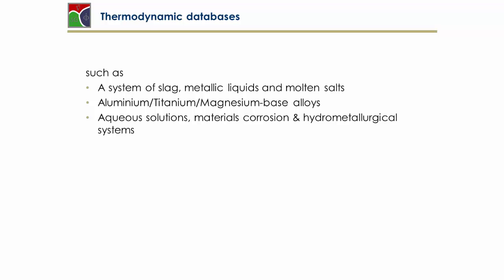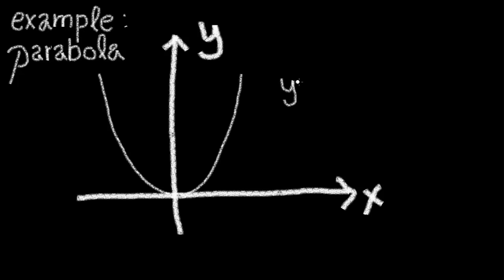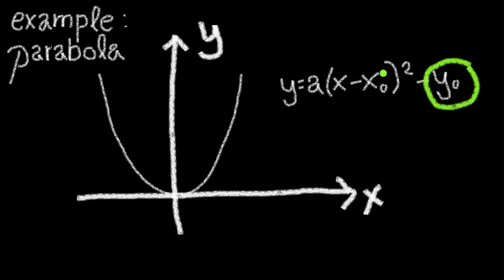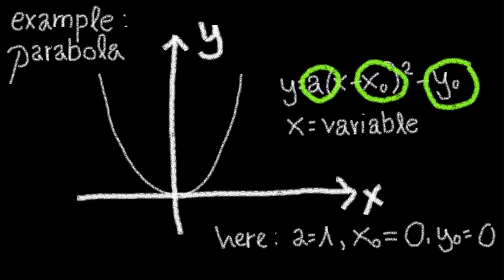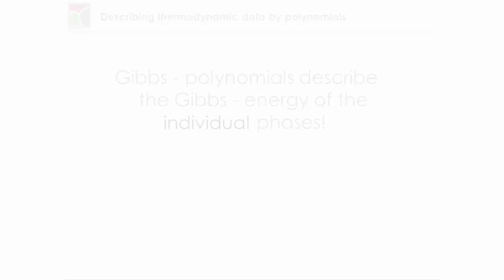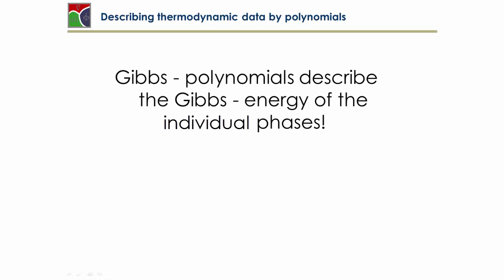Obviously, there are several examples for thermodynamic databases. But in the following, a mathematical example is presented to bring the basic idea of these databases home to you. For example, if you want to describe a parabola, just three values A, X0, and Y0 are sufficient to describe the entire behavior of the parabola from minus infinity to plus infinity.